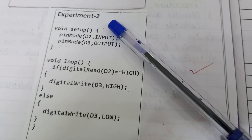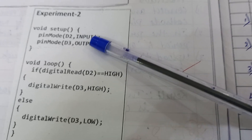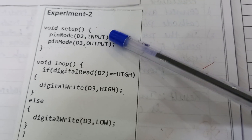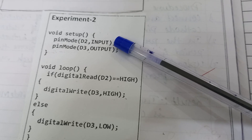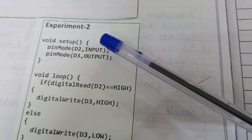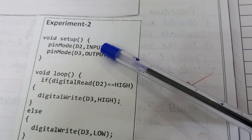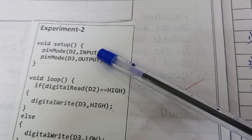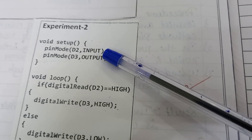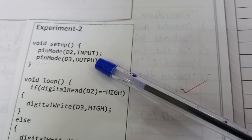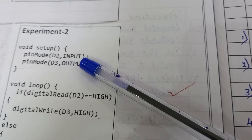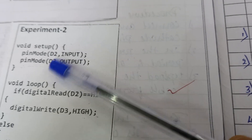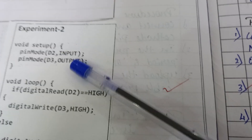Inside setup: pinMode(D3, OUTPUT) sets pin D3 as an output pin, meaning you can write a digital signal — high or low — to this pin. pinMode(D2, INPUT) sets pin D2 as an input pin, meaning you can read a digital signal — high or low — from this pin. So D3 is for writing and D2 is for reading.